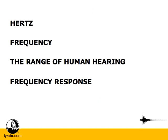So that's basically it for hertz, frequency, the range of human hearing, and frequency response. To recap: hertz, which is signified by a big H and a little Z, refers to the number of times a cycle or something happens per second. When we talk about hertz in relationship to frequency, we're talking about the number of times a sound wave completes a cycle per second. The range of human hearing is a frequency range of 20 hertz at the low end up to 20 kilohertz at the high end. And finally, frequency response refers to the range of frequencies a person can hear and how sensitive they are to those frequencies. We can use charts to represent the frequency response of different things, such as speakers, microphones, people, dolphins, bats, wombats — you name it.